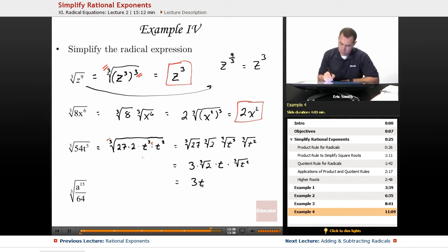So gathering up what was able to be taken out, I'd have a 3t times the cubed root of 2t squared. So simplify and bring out as much as you can, but if you can't, go ahead and leave them underneath the root.